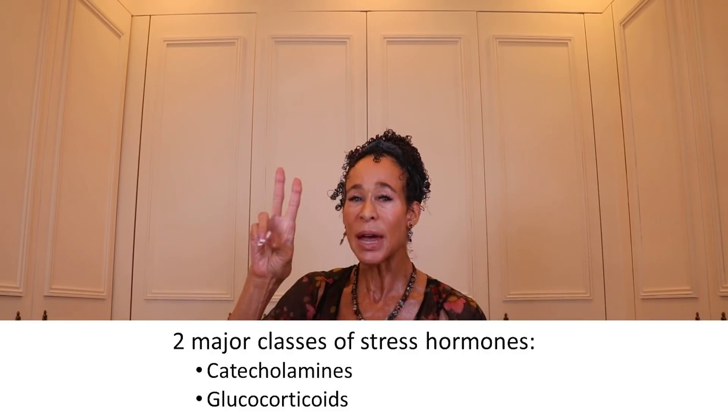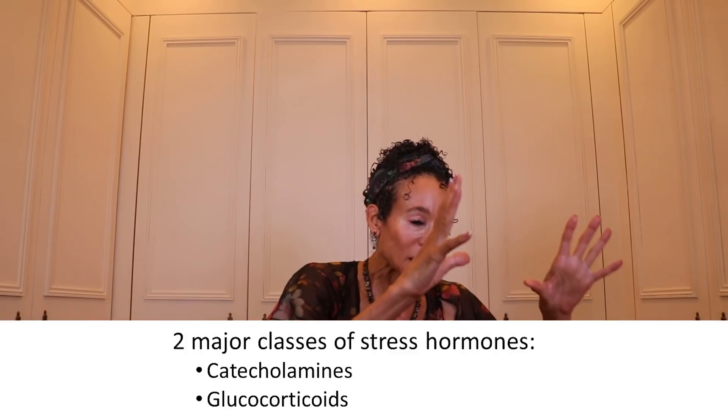Most of us find situations that are novel, unpredictable, uncontrollable, or painful to be stressful. Stress can come in many forms — physical or emotional — and your body doesn't really care which it is; it responds similarly to all kinds. When your body perceives something as stressful, it secretes two major classes of stress hormones: catecholamines and glucocorticoids. Everything has pros and cons, and these stress hormones are no different — they serve a useful purpose under normal circumstances, but when secreted in excess, they create problems.